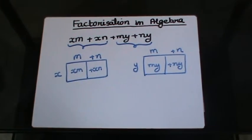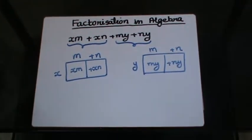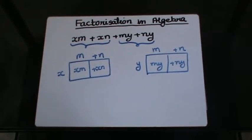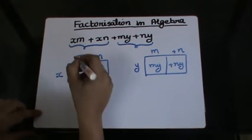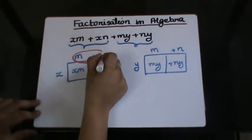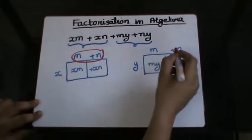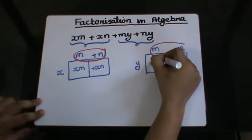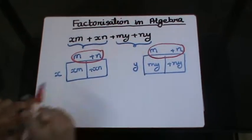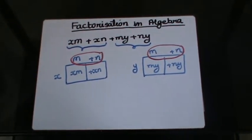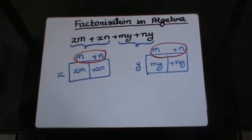Now, it's very important that the terms that I get above, meaning m plus n here and m plus n here, they should be exactly identical. They should be like terms, otherwise our factorization will be wrong.